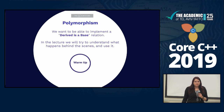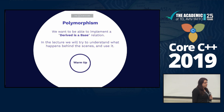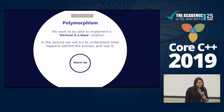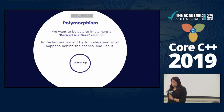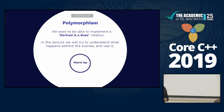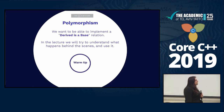We want to be able to have polymorphism in our code, and we want to be able to implement derived-as-a-base mechanism. In this lecture, I also want to go deeper and see what happens behind the scenes in the assembly when we implement virtual tables. So let's start with a warm-up.